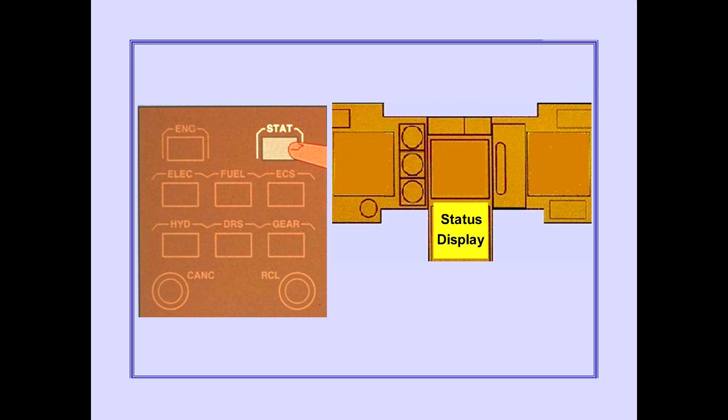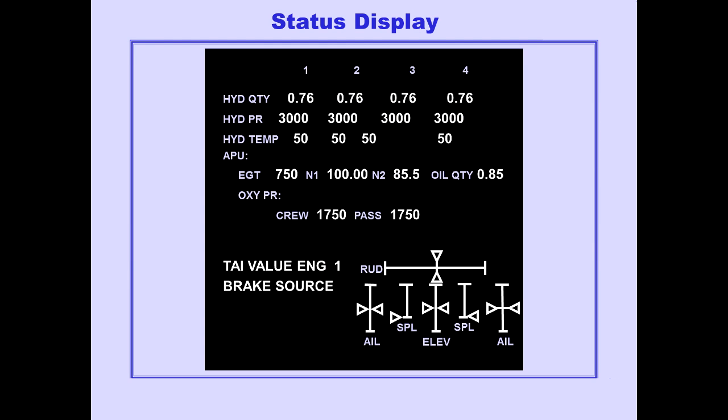Pushing the status display switch normally causes the status display to appear on the lower CRT. The status display shows airplane systems information. The information is also used with the dispatch deviation guide or airline equivalent to determine the airplane's readiness for dispatch and whether dispatch relief is available.